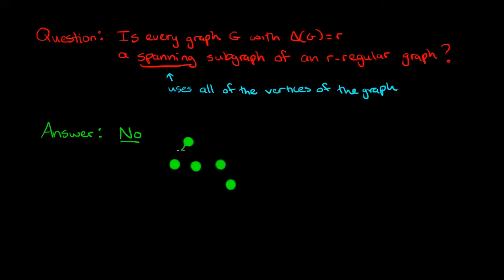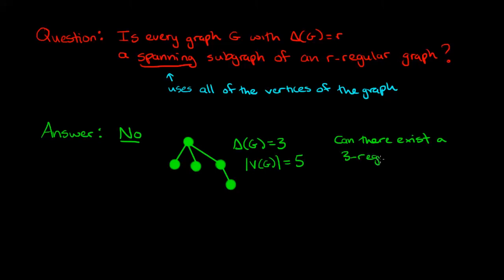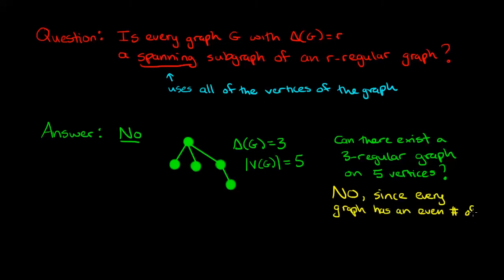Here's a counterexample: a graph with maximum degree three but with only five vertices total. The question becomes: can there exist a three-regular graph on five vertices, since we would want g to be a spanning subgraph of that graph? The answer is no, because every graph must have an even number of odd-degree vertices — a fact from the result that the sum of degrees equals twice the number of edges. So the answer is no for spanning, but yes for induced.